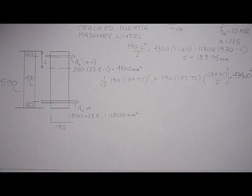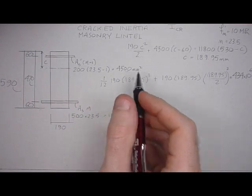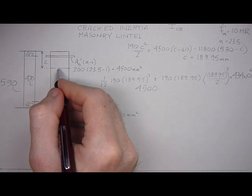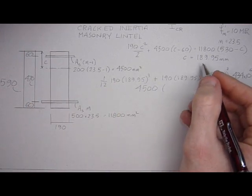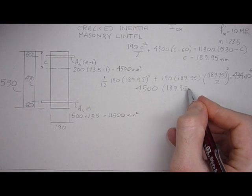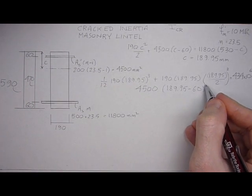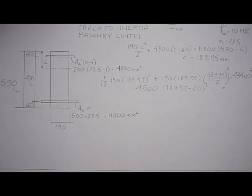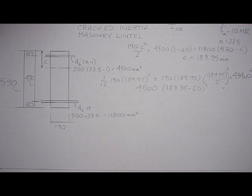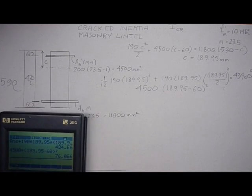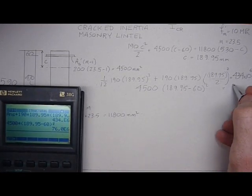And then the area of the steel is 4,500 times its distance squared, which is 189 minus 60 squared. 76 E to the 6th.